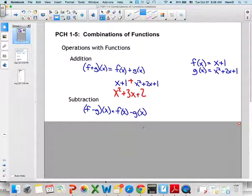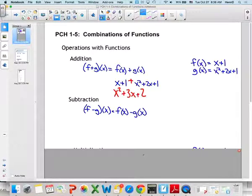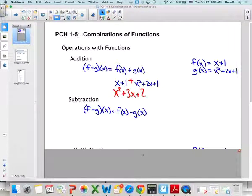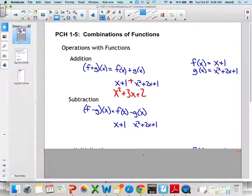Then we add subtraction. Someone anticipate here. What are we going to have to remember to do when we're doing subtraction? Get that negative to the whole g of x. So, we have x plus 1, and we're going to subtract the x squared plus 2x plus 1. So, we need to make sure we distribute that negative. And guys, these are little things that are not hard, but it's easy to forget.